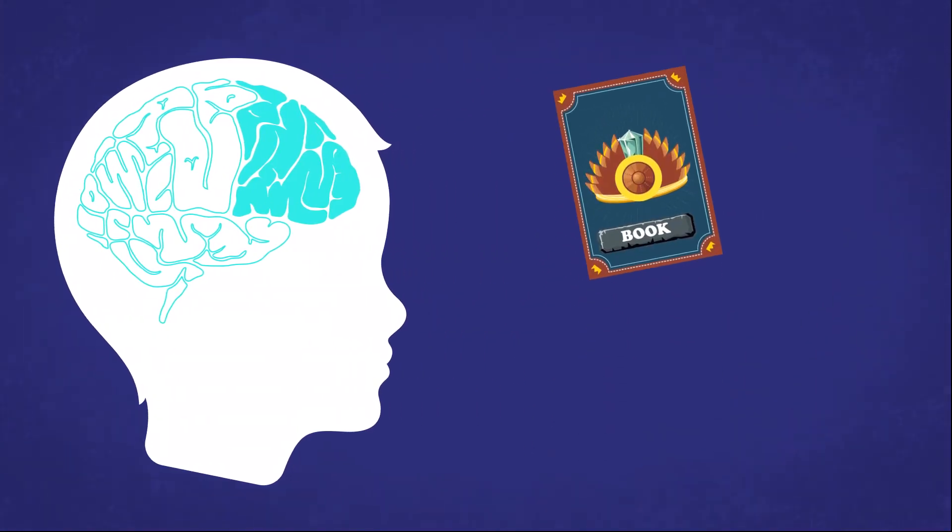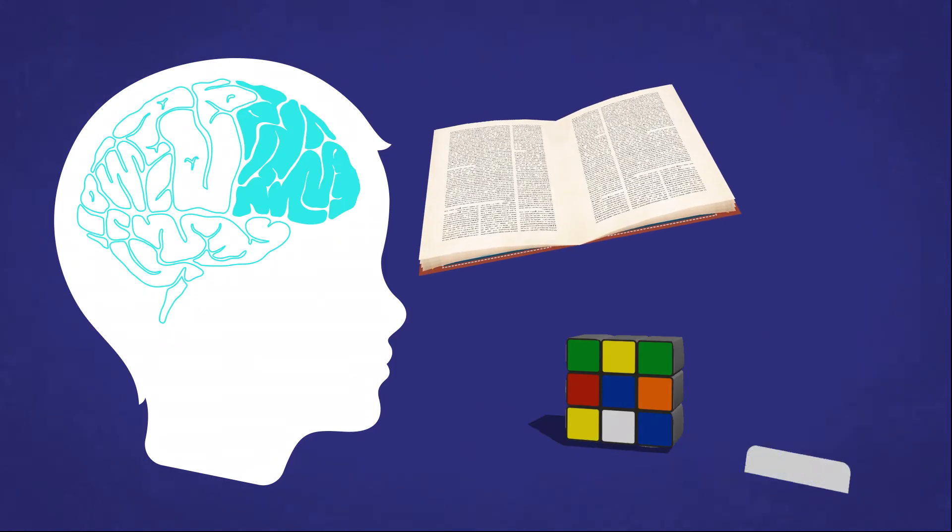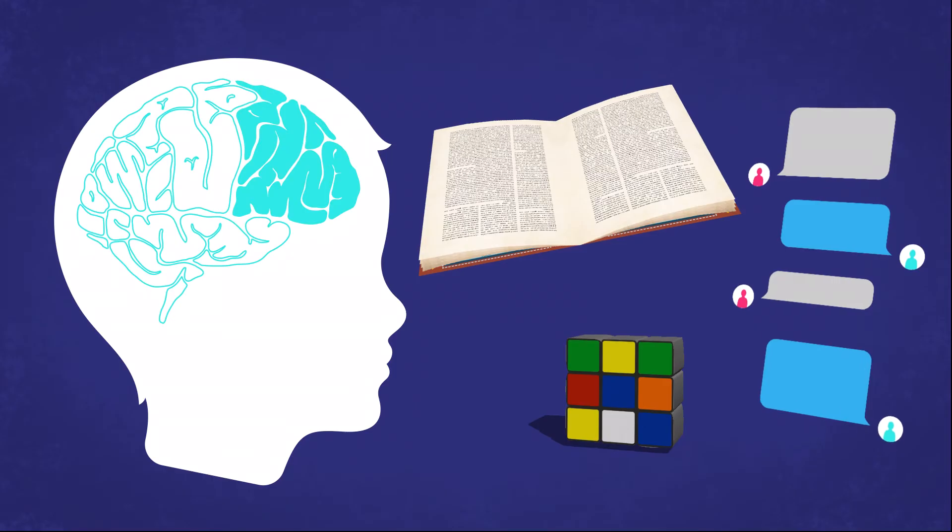Our smart brain helps us with things like reading, writing, solving problems, thinking clearly, and even with how we communicate.